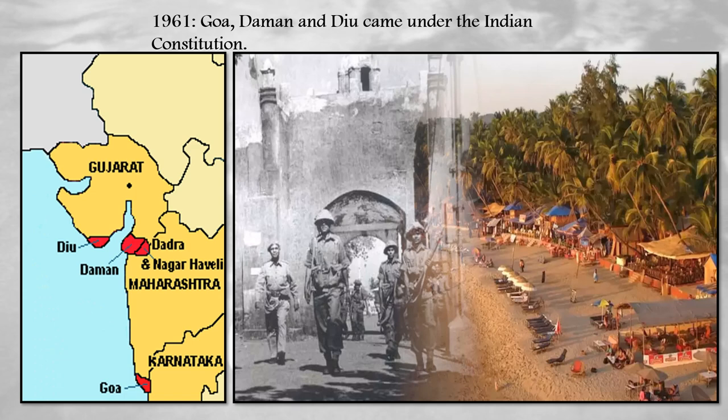On December 19th, 1961, Goa, Daman and Diu came under the Indian constitution.